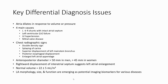On chest radiograph, we can find some signs such as the double density sign, splaying of the carina, superior displacement of the left main stem bronchus, posterior esophageal displacement, and left atrial appendage enlargement.